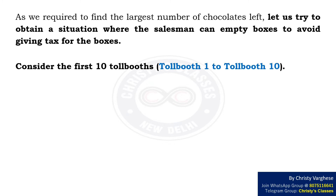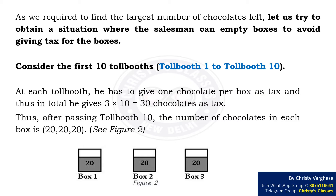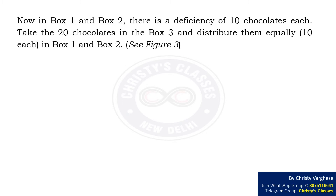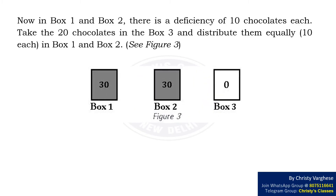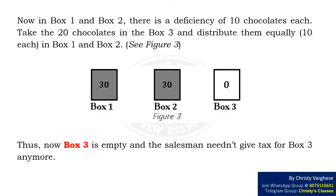Consider the first 10 tollbooths, that is tollbooth 1 to tollbooth 10. At each tollbooth, he has to give 1 chocolate per box as toll, and thus in total he gives 3 × 10, i.e. 30 chocolates as toll. After passing tollbooth 10, the number of chocolates in each box will be 20, as shown in the figure. Now, box 1 and box 2 each have a deficiency of 10 chocolates. Take the 20 chocolates in box 3 and distribute them equally in box 1 and box 2. Thus, box 3 is now empty and the salesman needn't give toll for box 3 anymore.